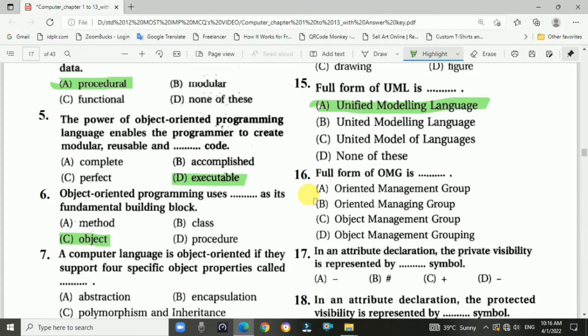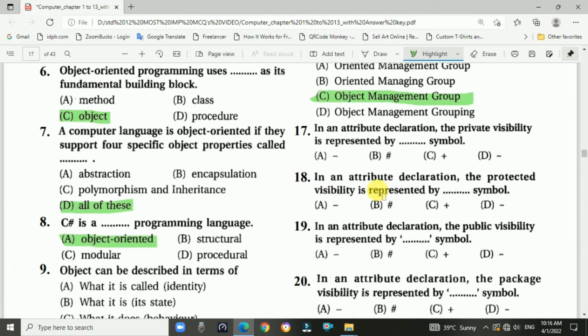Question number sixteen: Full form of OMG. Answer is C, Object Management Group. Question number seventeen: In an attribute declaration, the private visibility is represented by blank symbol. It is displayed by the hash symbol. Question number eighteen: In an attribute declaration, the protected visibility is represented by blank symbol. Answer is B, hash.